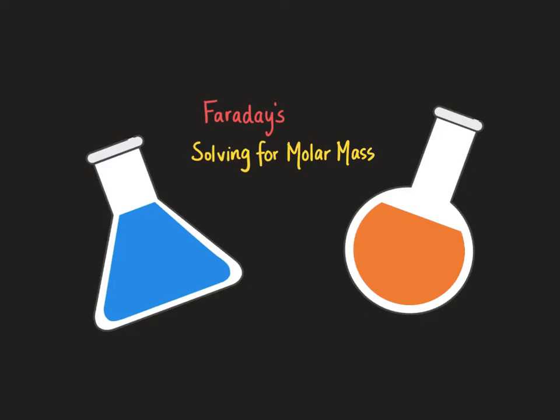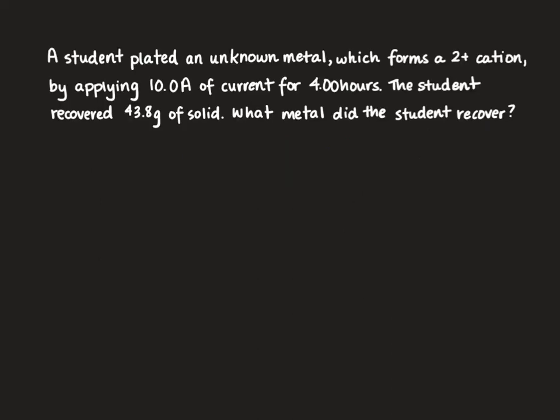In this video we're going to use Faraday's law to solve for the molar mass or identity of an unknown substance. The problem is that a student plated an unknown metal which forms a 2+ cation by applying 10 amps of current for four hours. The student recovered 43.8 grams of solid. What metal did the student recover?